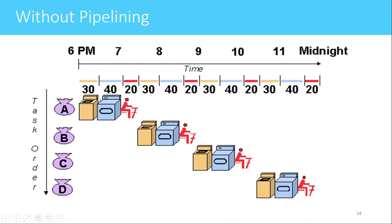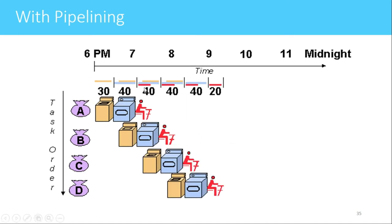This is the concept of pipelining. In the PIC16F877 controller there are only two stages, but in this laundry example there are three stages. If we implement pipelining, the time required for executing the tasks is reduced. Here, customer A's clothes are washed and given to the dryer; at that time the washing machine is empty, so customer B's clothes are placed into the washing machine.